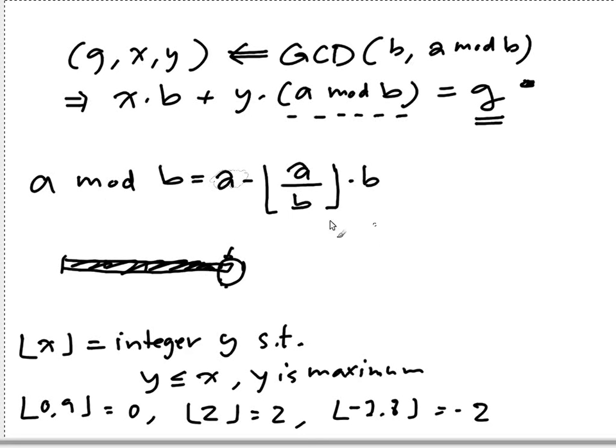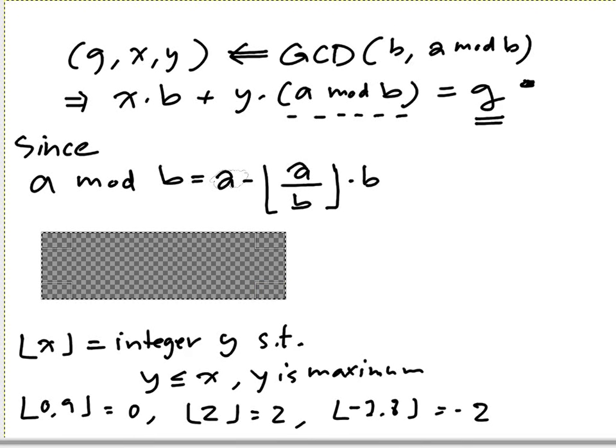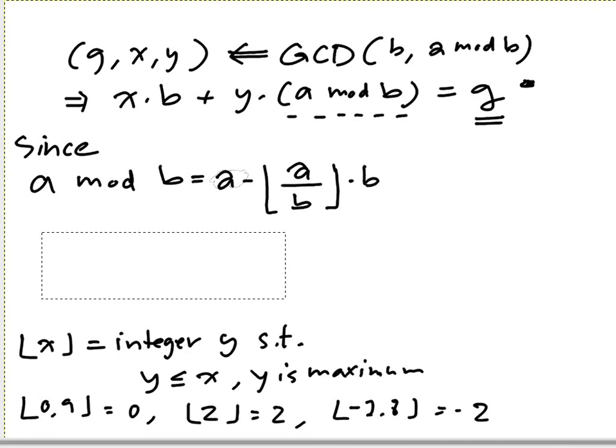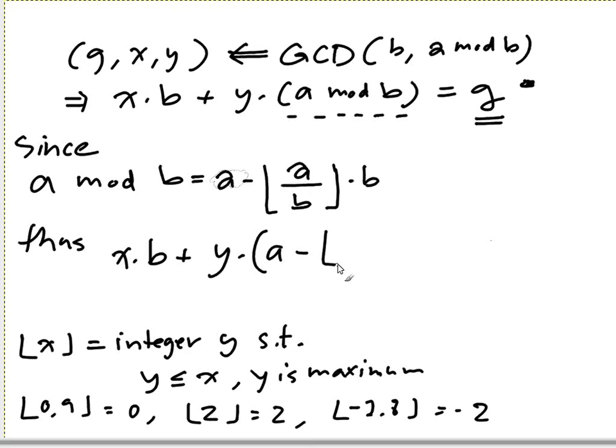So you know that a mod b can be written as this. So we can plug this in. Thus x times b plus y times, so we can plug this in. So this is a minus a over b times b is equal to g, right?